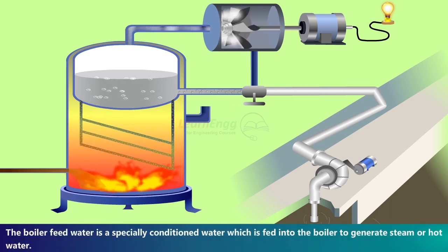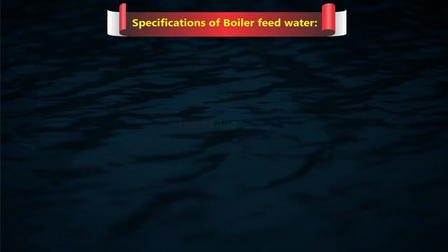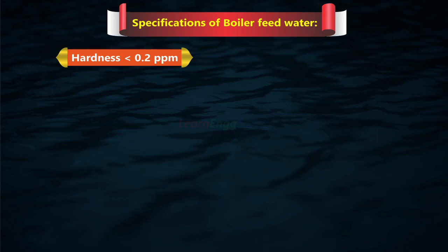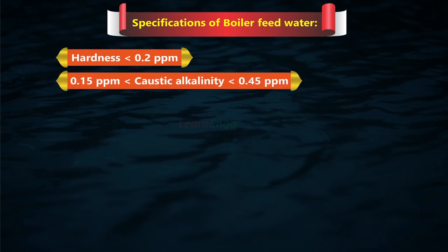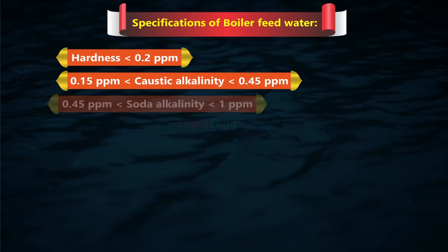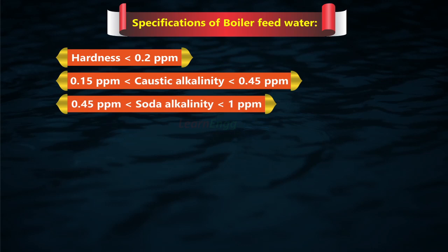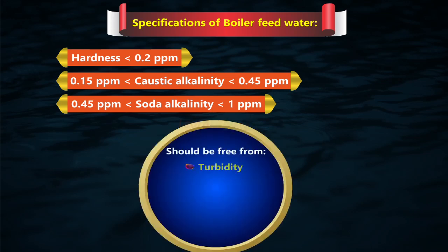Boiler feed water is specially conditioned water fed into the boiler to generate steam or hot water. Specifications of boiler feed water: water hardness should be below 2 parts per million; caustic alkalinity should be between 0.15 and 0.45 parts per million; soda alkalinity should be between 0.45 and 1 parts per million. It should be free from turbidity, sediments, and organic matter, oil, and grease.